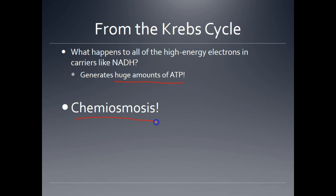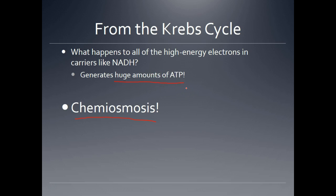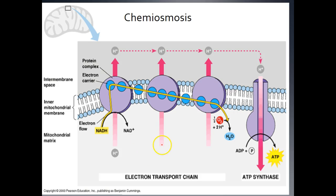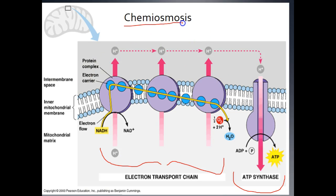The goal of chemiosmosis is to produce huge amounts of ATP. We've already talked about producing a little bit of ATP using substrate level phosphorylation, but we only netted two ATPs per glucose during glycolysis, which isn't very many. We're going to produce up to 36 ATPs just during chemiosmosis alone. Chemiosmosis is the process that requires ATP synthase. Here is the electron transport chain — this portion of the diagram is the electron transport chain, and this portion is the ATP synthase portion.